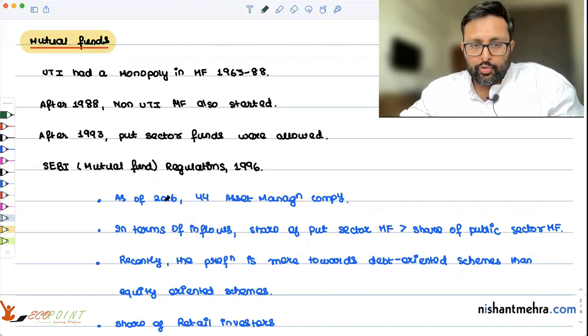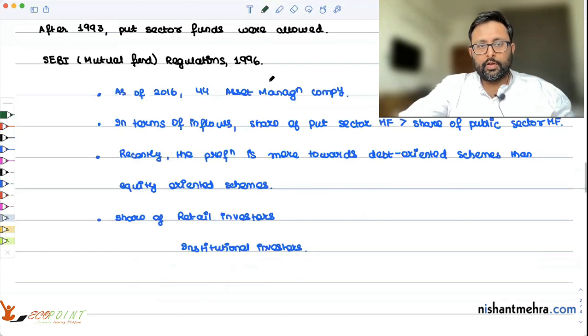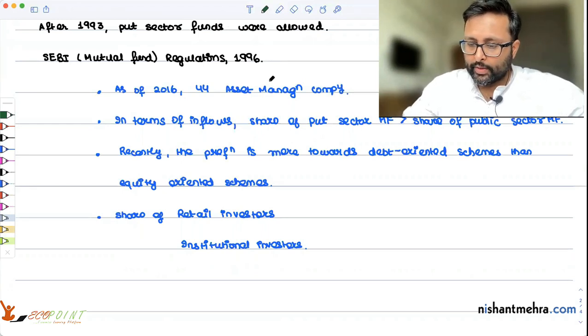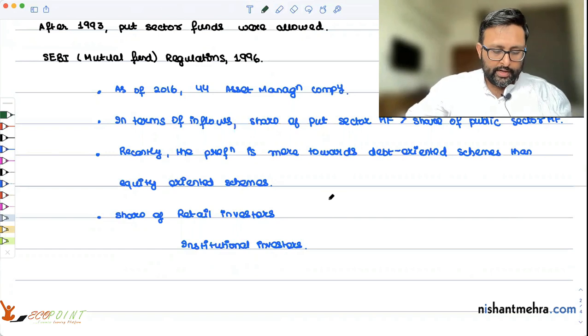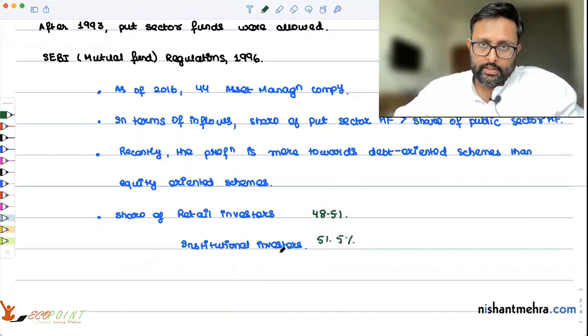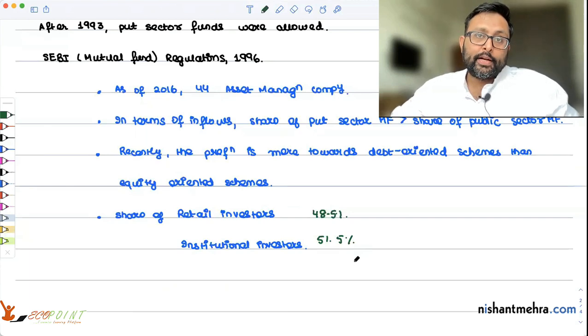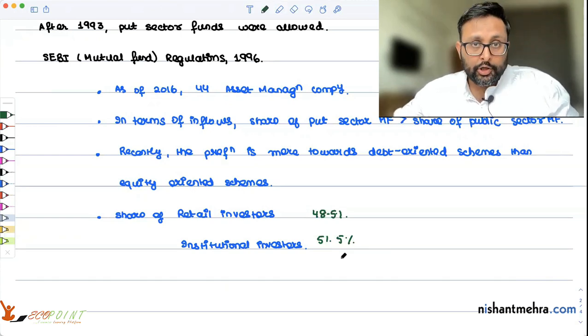They say that the share of the retail investors in assets under management is around 48.5%, while 51.5% is coming from the institutional investors. The assets under management in the mutual funds industry, if you look at some non-metro towns and cities, this is a testimony to the fact that mutual fund industry can also grow even further. There is a huge scope for this.